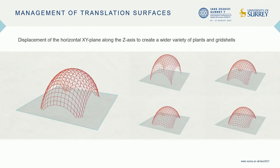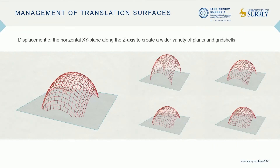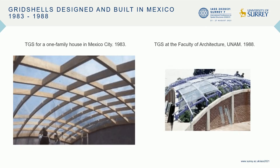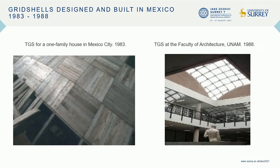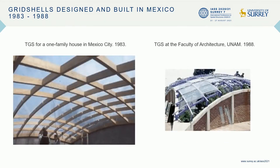GEOG also offers the user the ability to move the XY plane along the Z axis. The surface below the horizontal plane disappears, which expands the variety of plans that can be created. The design and construction of translation grid shells in Mexico started in 1983. The form-finding process, design, and geometry of all projects were realized and calculated with GEOG. The following projects demonstrate the adaptability and versatility of translation surfaces applied to the form-finding process, the design, and the construction of grid shells.